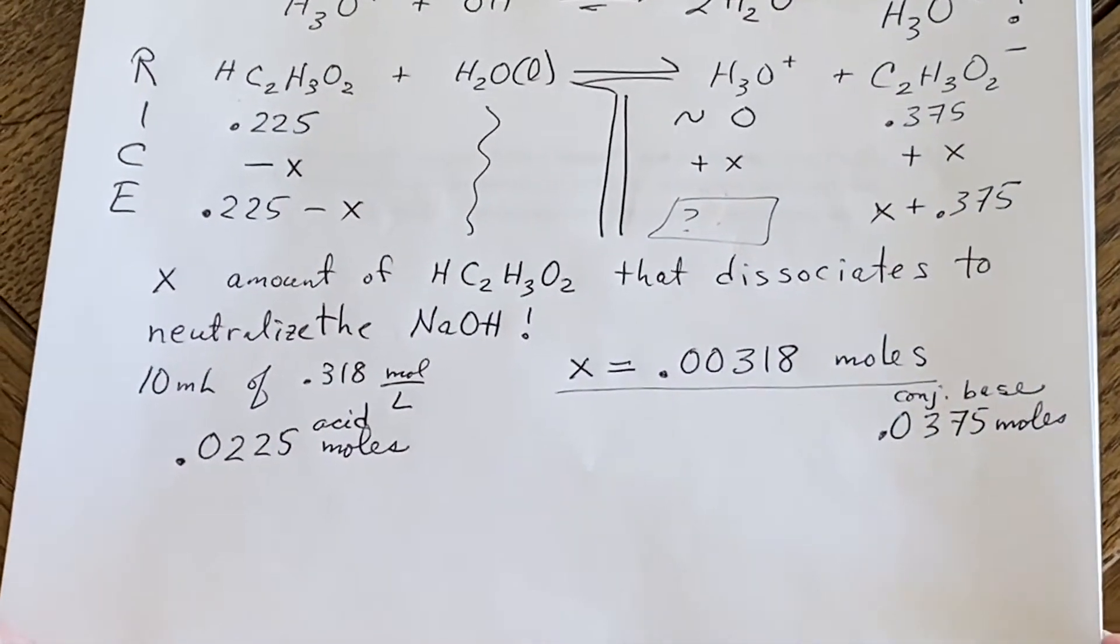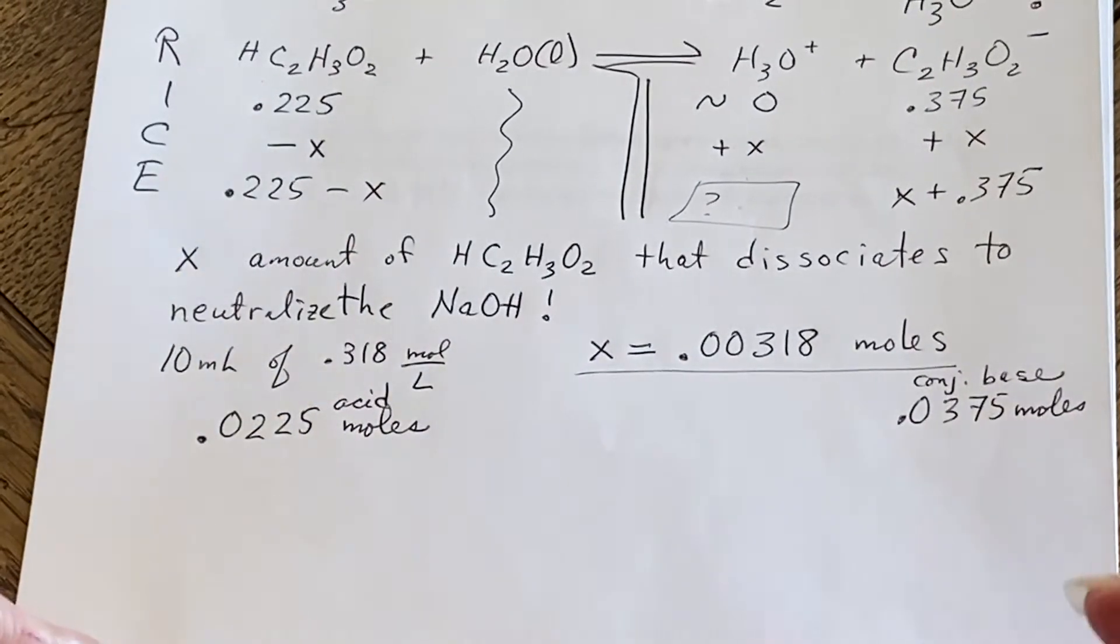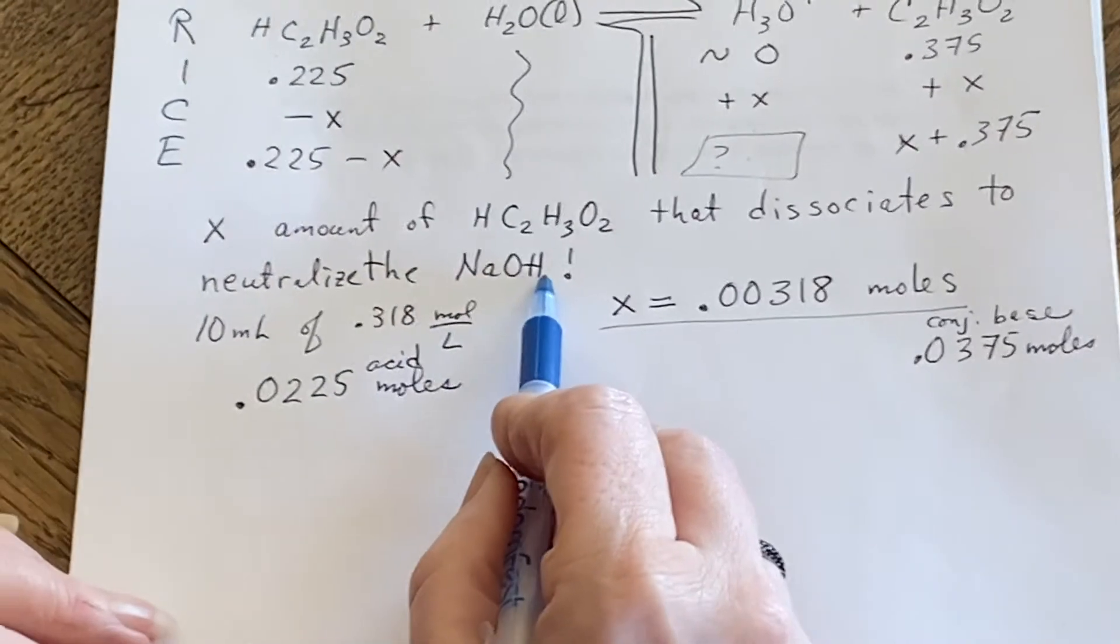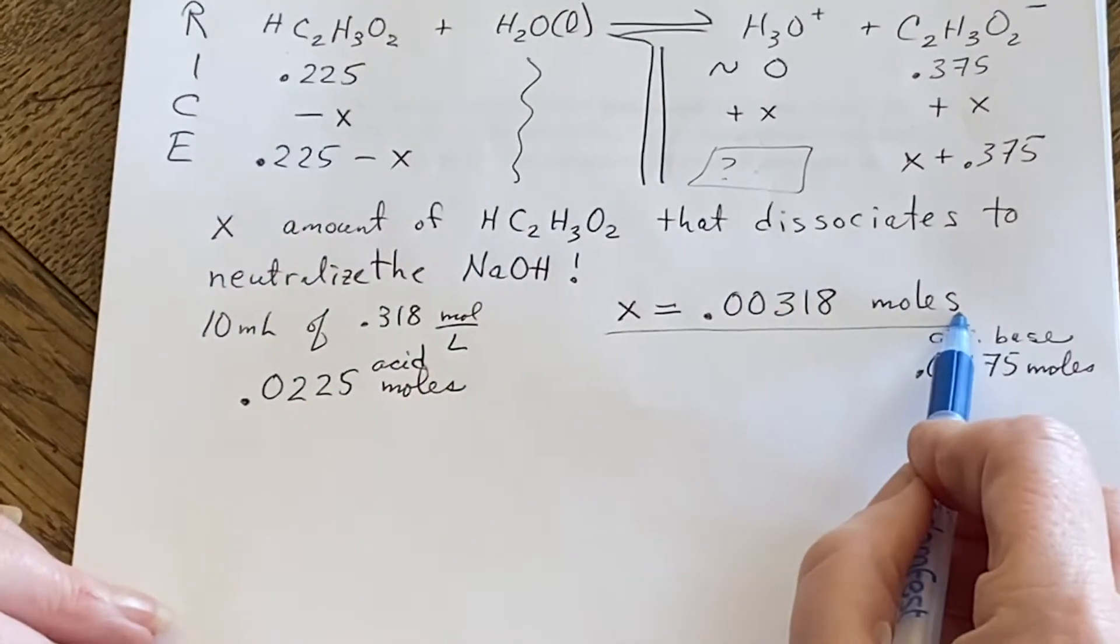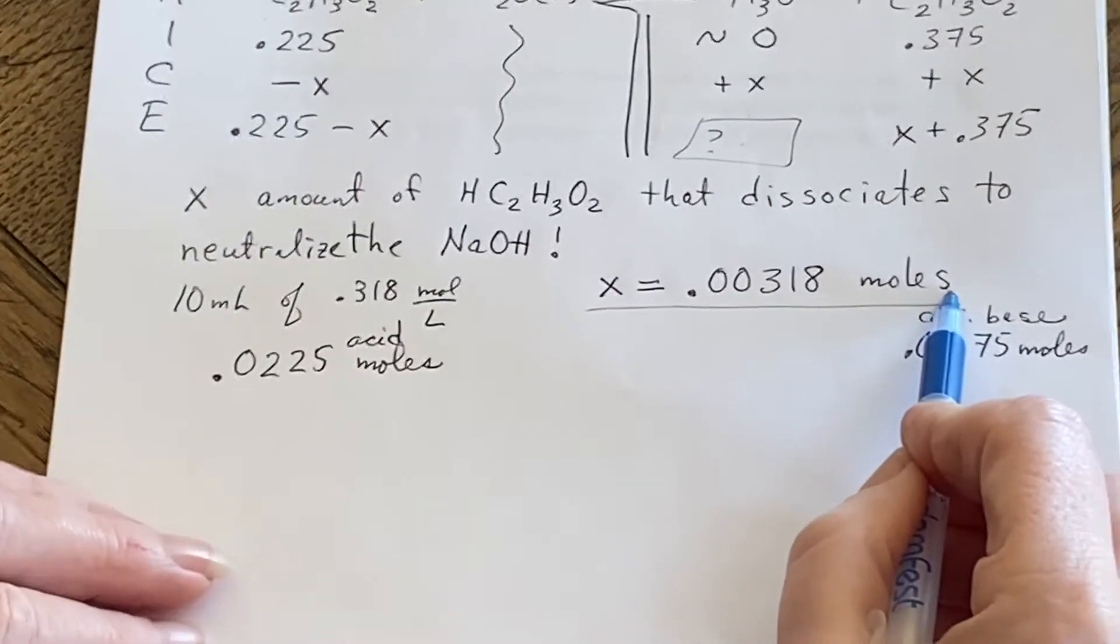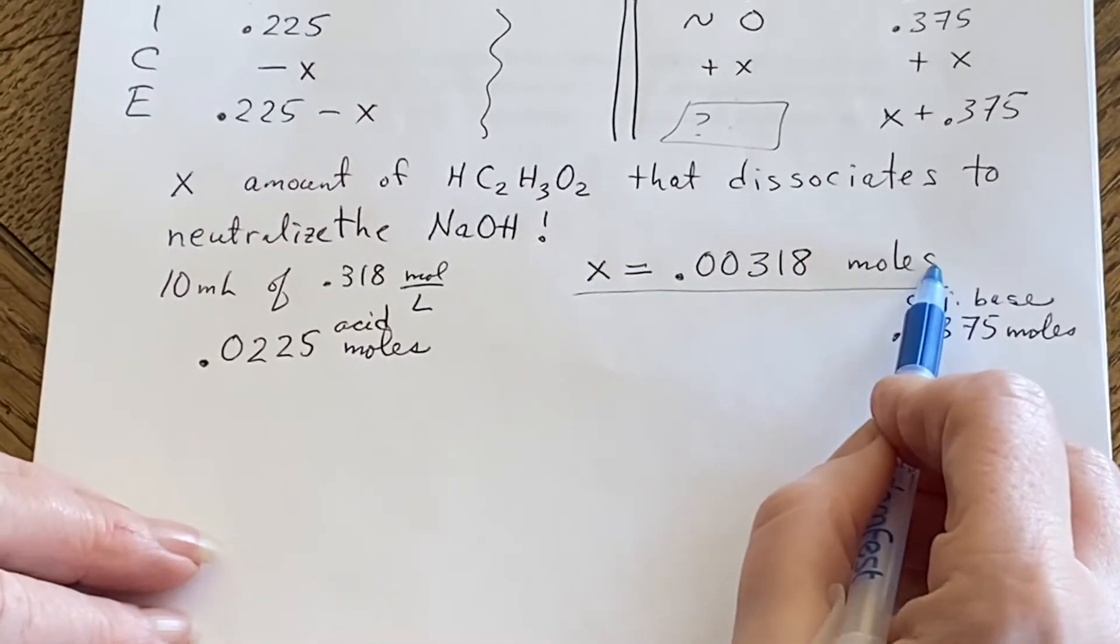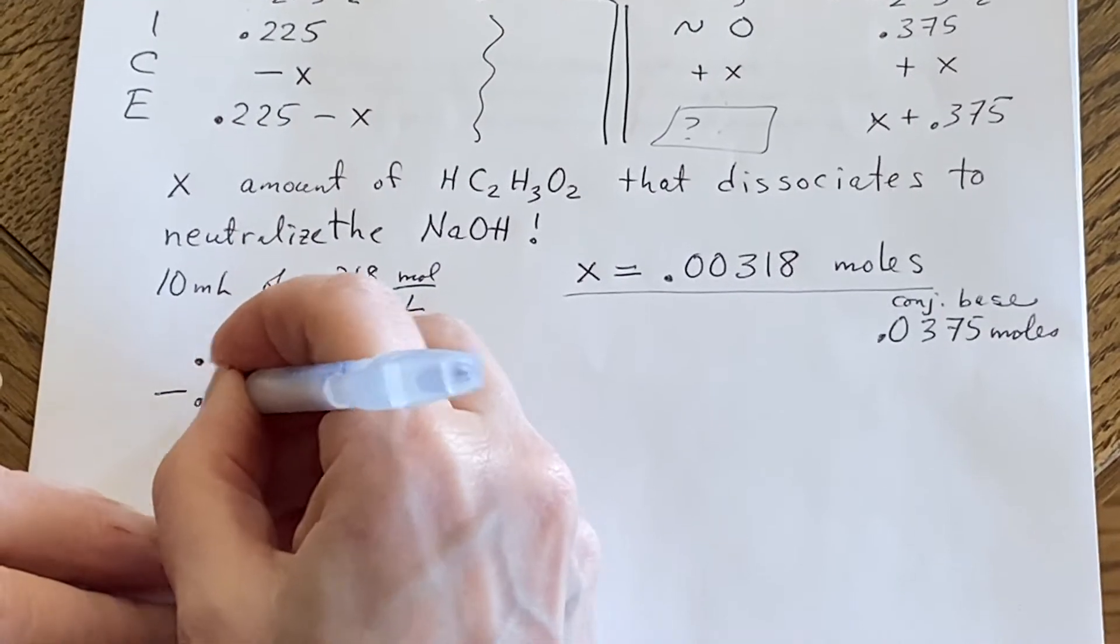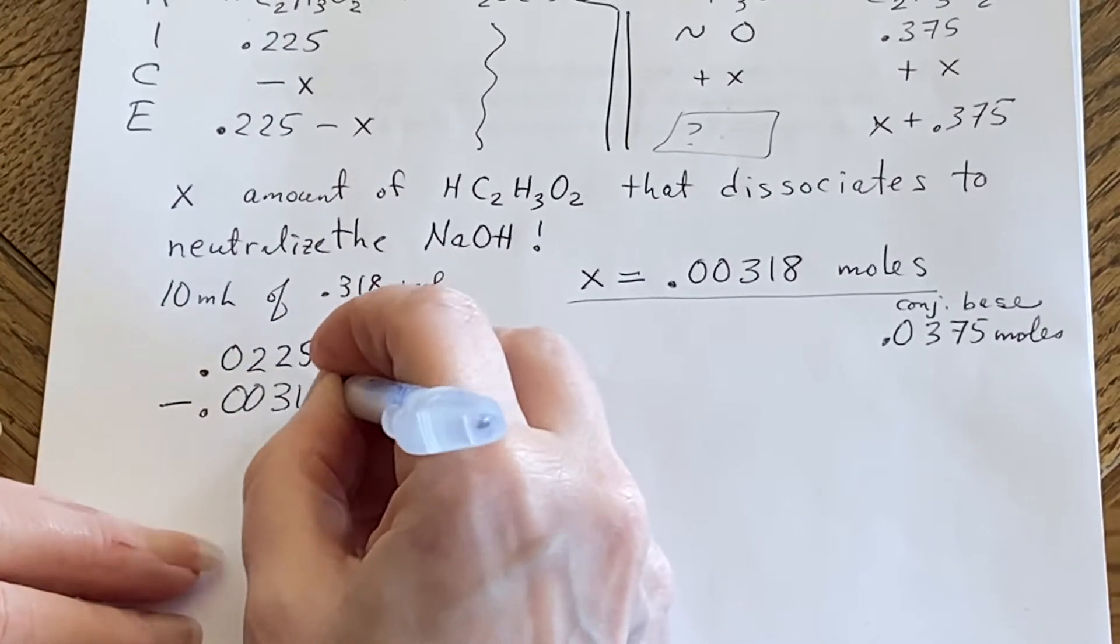What should I do with that then? I said that x was how much was dissociated to neutralize. I've came up with this number of moles. What did I say that that meant?